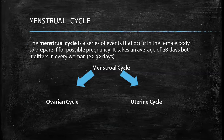Some women may experience cycles of 22 days — it depends on the individual. Remember, this cycle only happens in the female body. The menstrual cycle is divided into two important parts: we have the ovarian cycle and the uterine cycle.